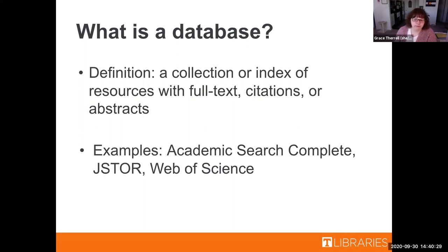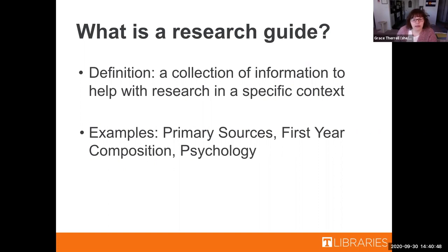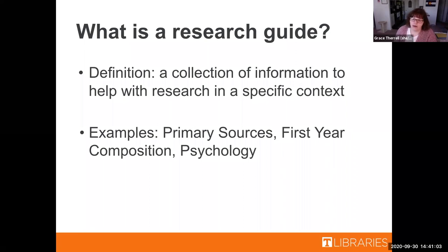Our last term for today is a research guide — a collection of information to help with research in a specific context. That could be a specific discipline like English, or a specific class like First Year Composition. Examples include a primary source research guide, a first year composition guide, and a psychology research guide, which gives you sample databases, journal articles, and books to get you started on research.